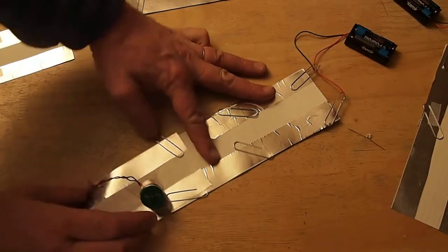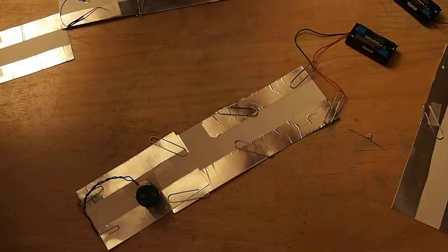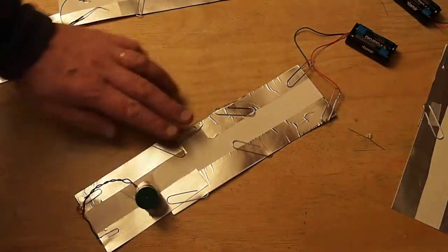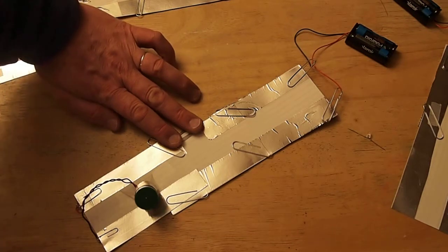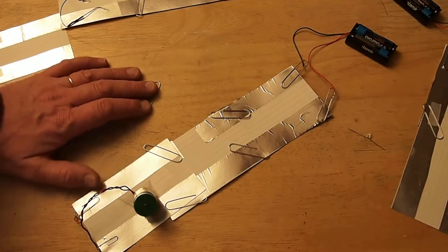Alright, so since this is a switch, this one here is a switch, we'll need to bridge it with something. We could bridge it. We'll just use another paperclip. And what we have here is you can hear the motor turning, and you might even be able to see it.